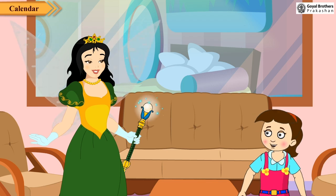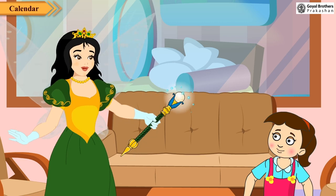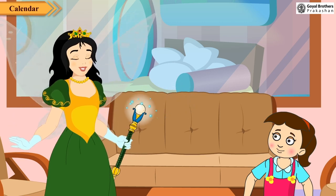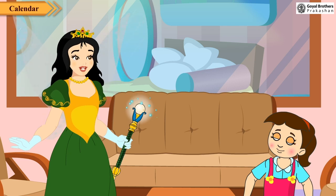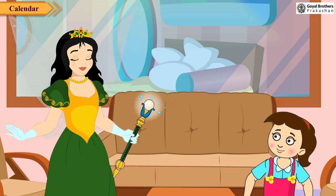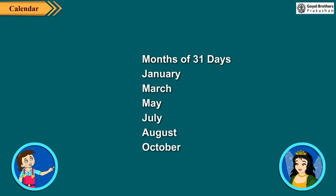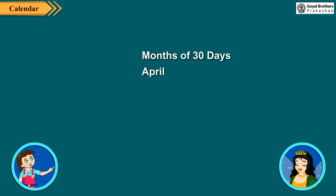But you didn't tell me how many days are there in a month. Relax Neha, I am coming to this. In fact, all the months do not have equal number of days. Some have 31 days, some have 30 days, and February has 28 or 29 days. The months with 31 days are: January, March, May, July, August, October and December. The months with 30 days are: April, June, September, November.